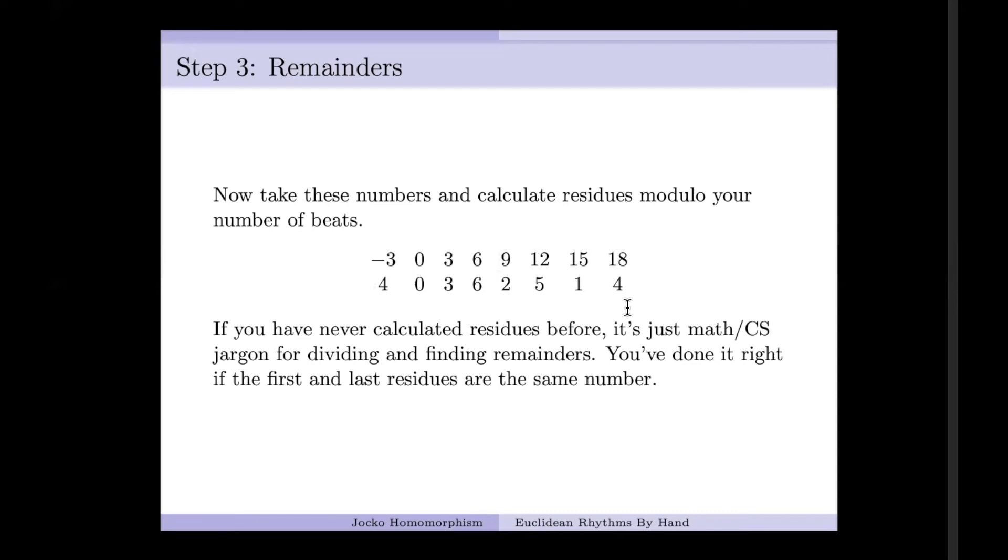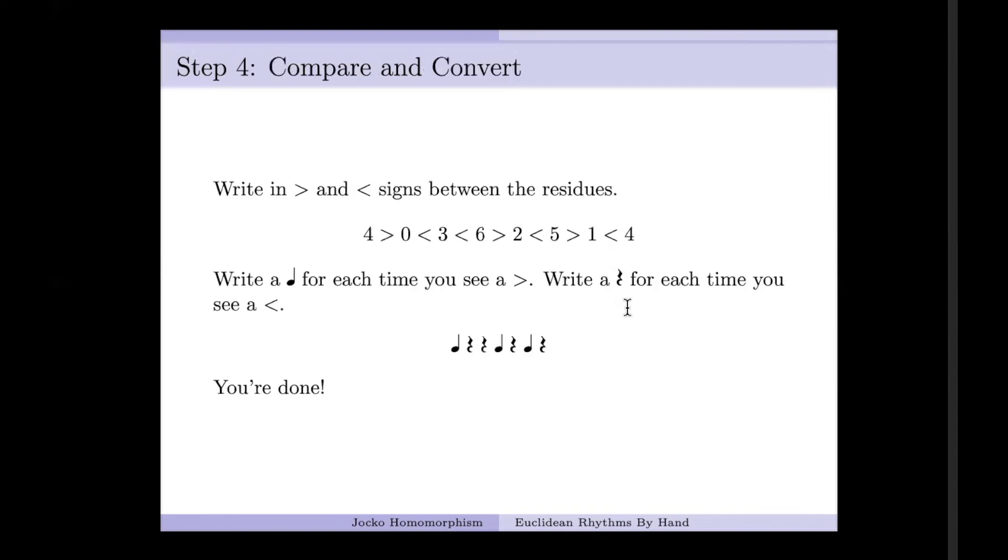Now we're almost ready to start writing down our notes and our rests. The last thing we got to do, we're going to use the remainders that we just calculated. And in between them, we're going to write in greater than signs or less than signs, just like in good old algebra. So for me, four is bigger than zero. Zero is less than three. Three is less than six. Six is greater than two. Two is less than five. Five is greater than one. And one is less than four. Pretty simple stuff.